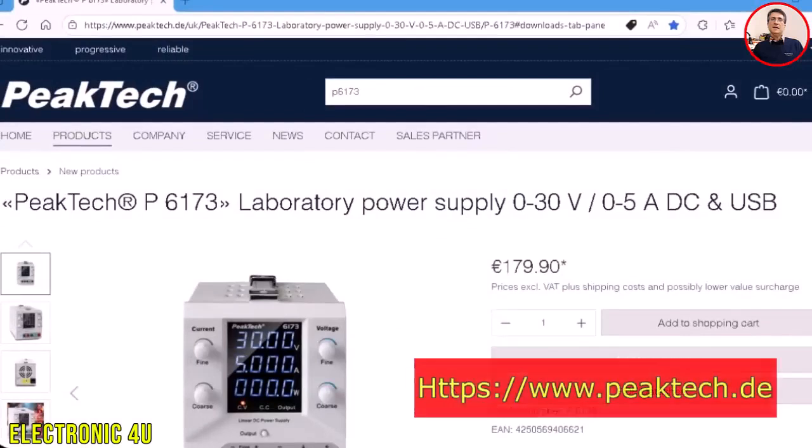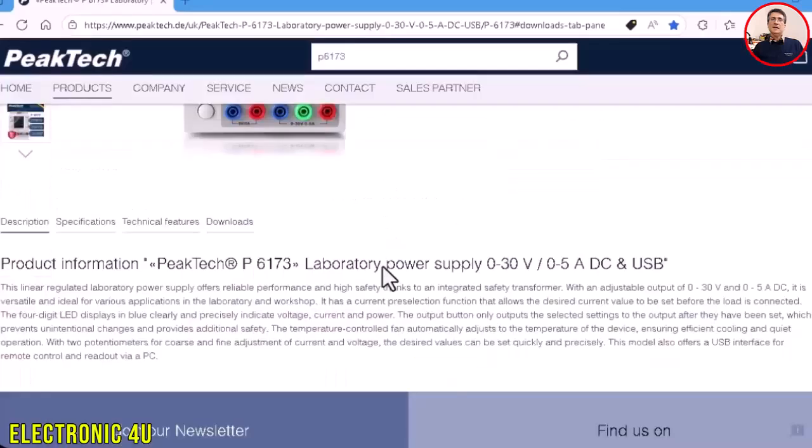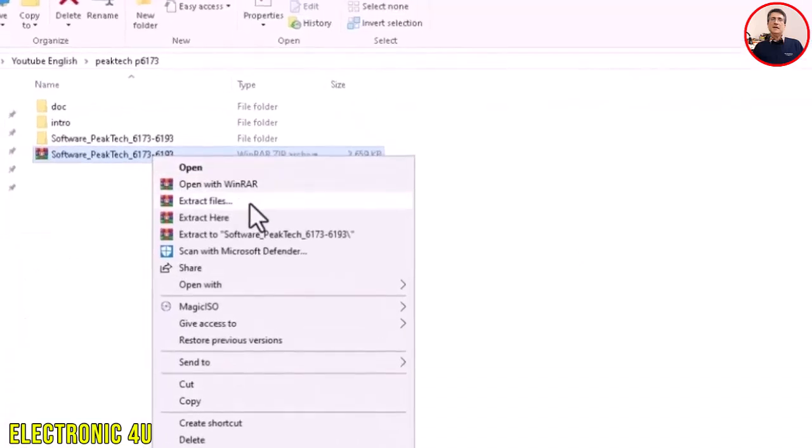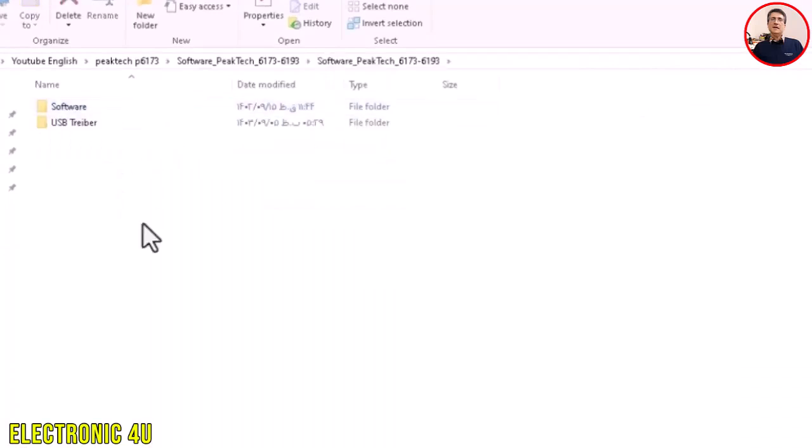The first step is to download the software for this device. We go to the official PicTech website and search for the model P6173. On the product page, we go to the download section and click on the software link to start the download. After downloading the file, we extract it from the zip folder. Two folders appear, and we need to install both programs.